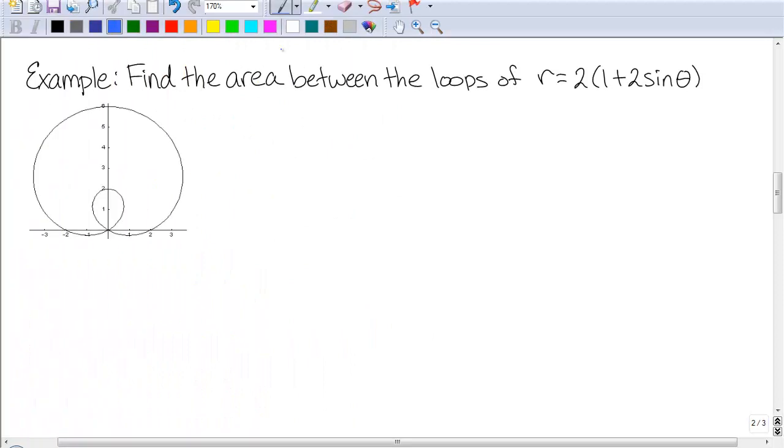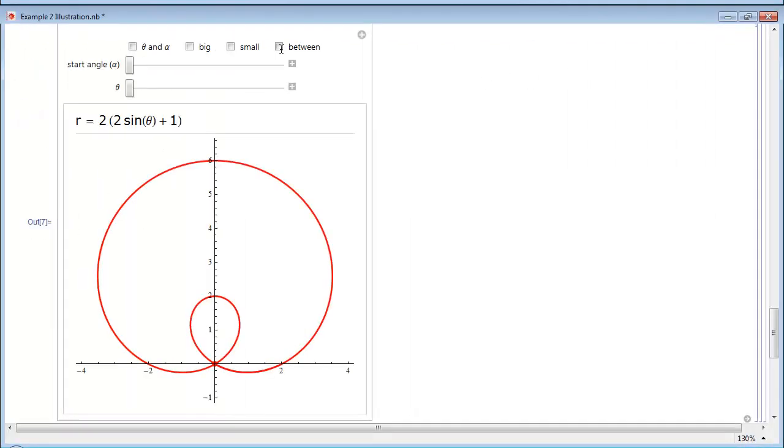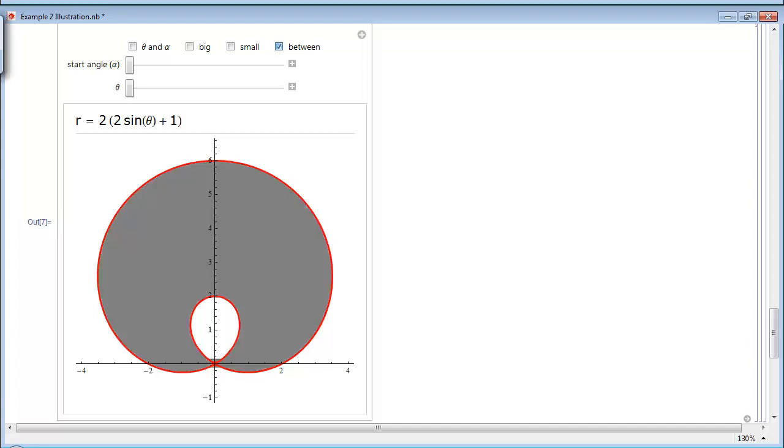In this example, we want to find the area between the loops of the curve r equals 2 times the quantity 1 plus 2 sine theta. We need to figure out a strategy for how we're going to solve this problem.